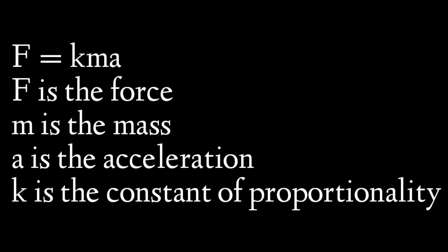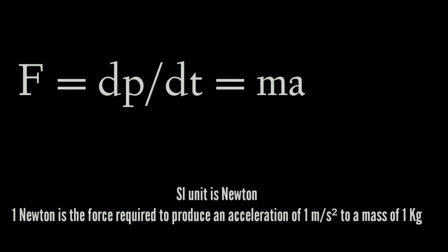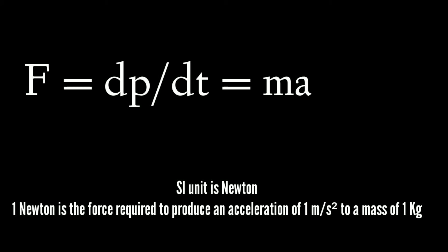We can write F = K × ma, where K is a constant of proportionality. Since the unit of force has not been defined so far, we have the freedom to choose any constant value for K. For simplicity, we take K = 1. So we have F = dp/dt = ma. The SI unit of force is the Newton.